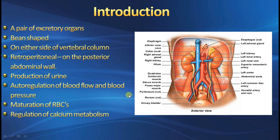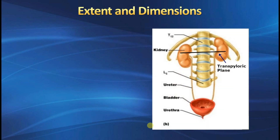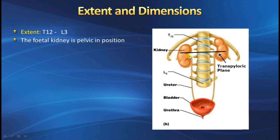The vertebral extent of the kidney is from the T12 vertebra to the L3 vertebra — 12th thoracic to the 3rd lumbar vertebra. The right kidney is slightly lower than the left one because it is displaced slightly lower due to the presence of the liver. The fetal kidney is at a lower position, and as growth proceeds, ascent of the kidney takes place, because the human kidney is actually developed from the metanephros, which is at a lower lumbar level.